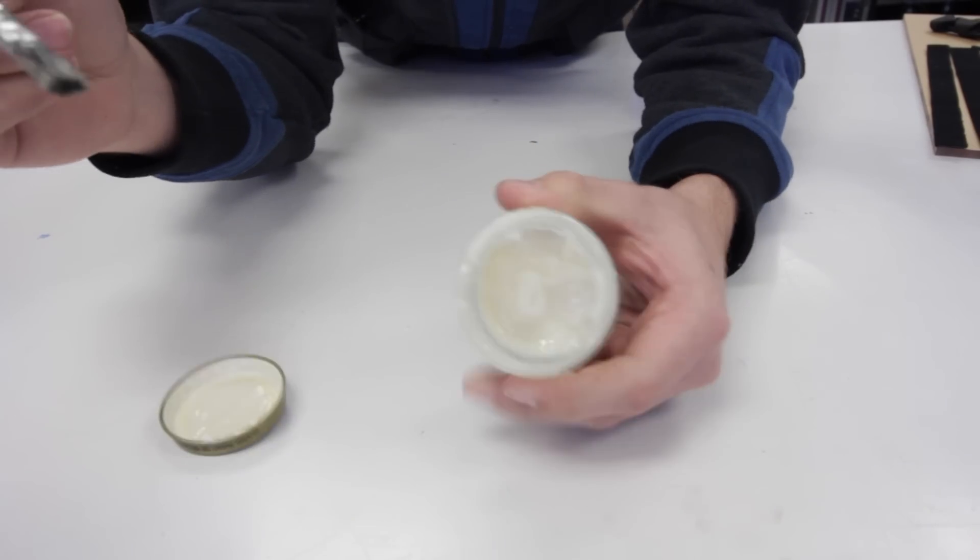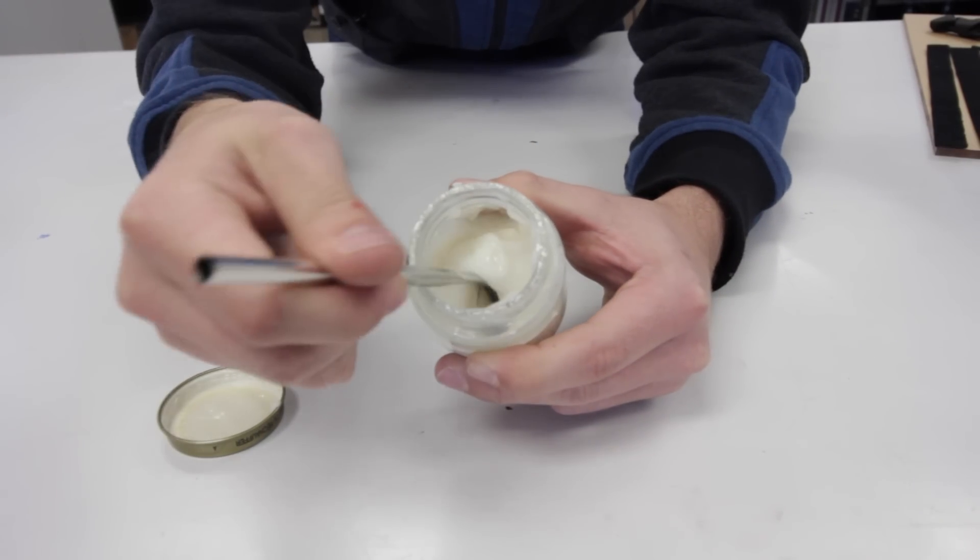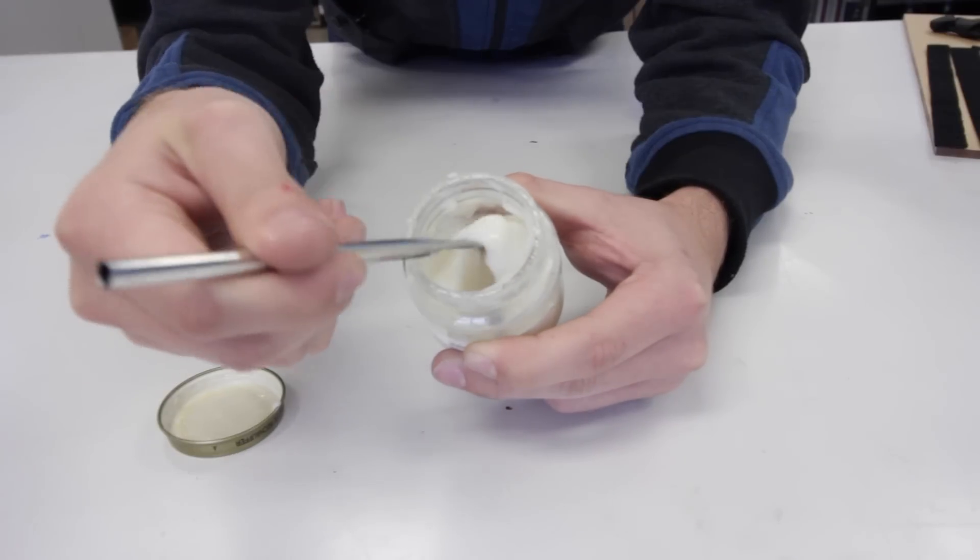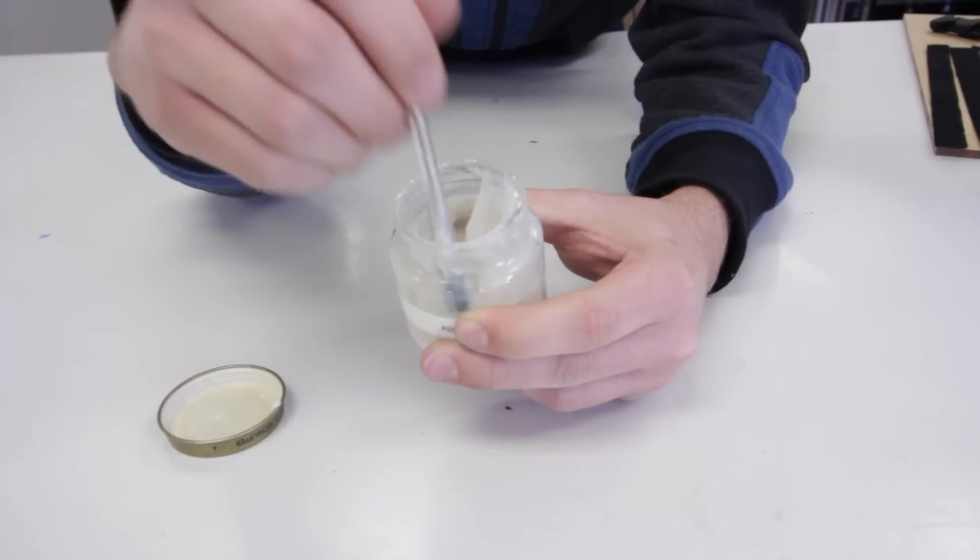ABS slurry is used to blend seams between two prints, or to repair layer separation. ABS slurry should be like a thick paste, like taffy or putty.